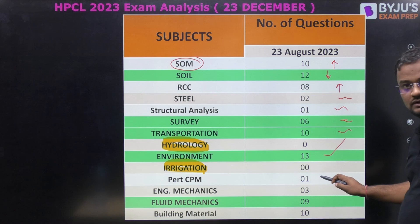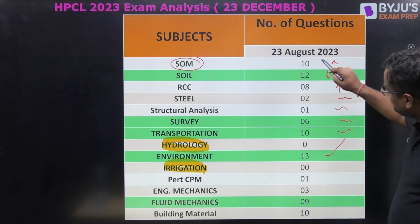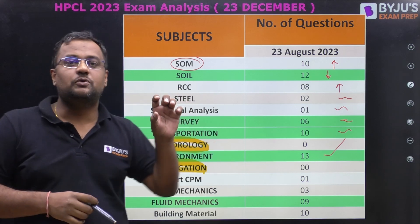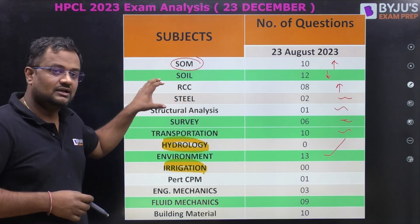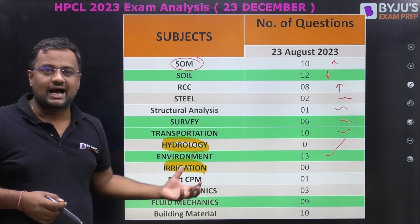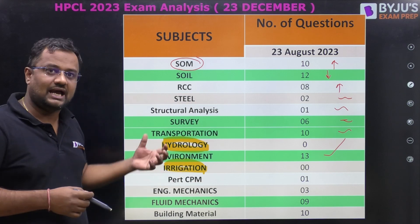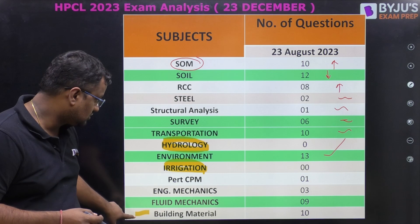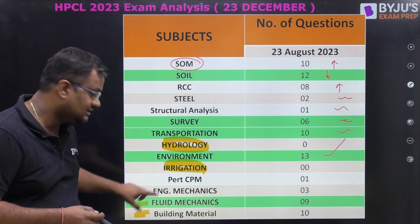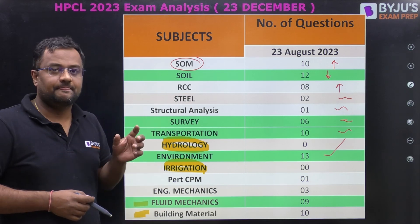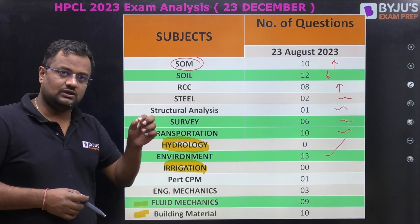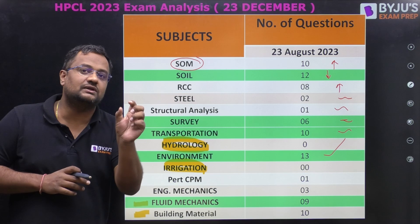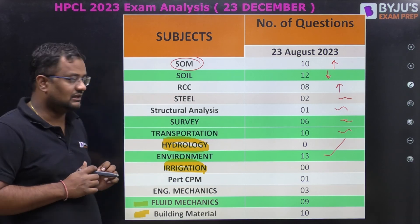For instance, PERT/CPM had zero questions earlier but this time there was a question from it. So in upcoming years, transportation, environment, soil mechanics, building materials will likely have higher weightage, while topics like hydrology, irrigation, and PERT/CPM will have relatively less weightage — but the exact numbers are very difficult to predict.